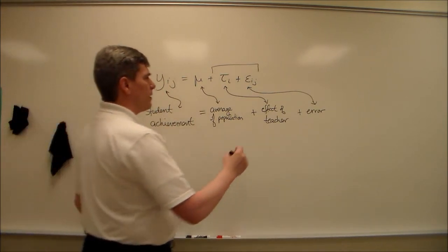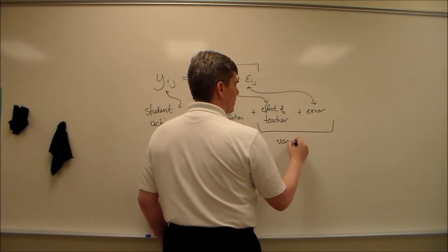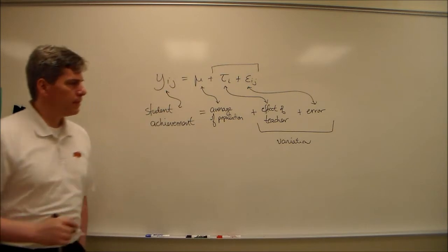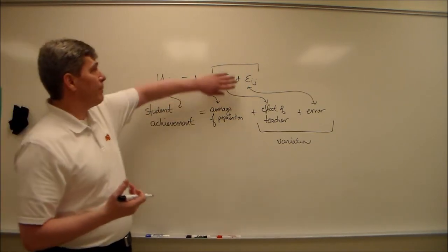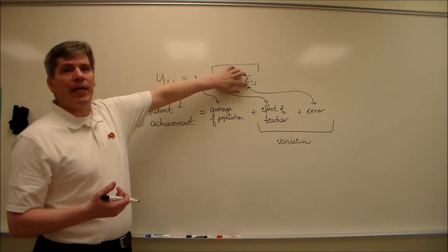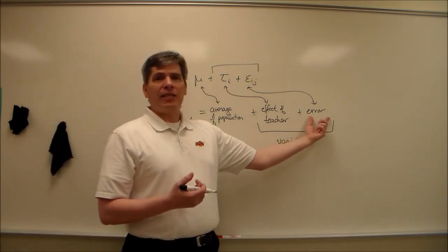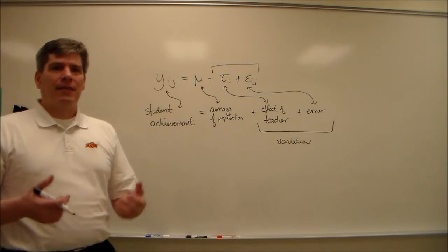And again, these things cause the variation. So we've broken up that big epsilon, the epsilon where we didn't include teachers, into two parts, something that's still unexplained, but something that we've measured and are able to explain, which means that this unexplained error goes down, which means that our ANOVA test gets more powerful.